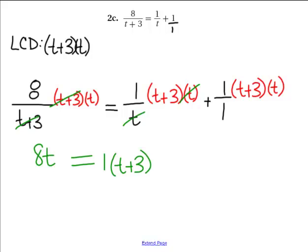And then finally we get to this fraction here and this cannot cross off. It can't simplify. So what I'm going to end up doing is multiplying 1 times all of that stuff, or T plus 3 times T.